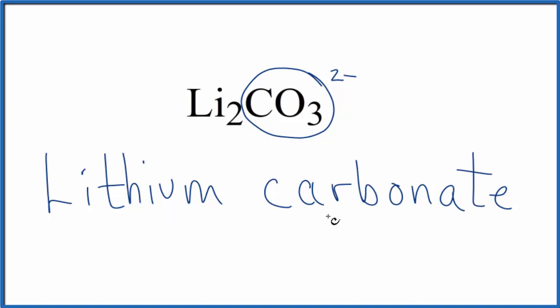If you are given this name and asked to write the formula, you need to realize that lithium is in group one on the periodic table. It has a one plus ionic charge. Since that carbonate has a two minus ionic charge, we need two lithiums for it to all add up to zero, to have a net charge of zero. So that's why it's Li2CO3.